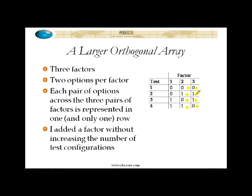Now some of you might be thinking, wait a minute — two times two times two is eight, so where are those other combinations? Well, they're not there. We're not trying to cover all the triples, remember. We're trying to cover all the pairs. So we've covered exactly half of the triples. Which half? I don't know — I'm not trying to cover the triples. It's one and two, two and three, and one and three — those are the ones I'm worried about.